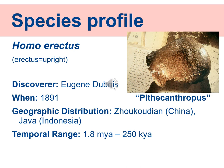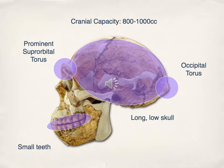Homo erectus can be found at Zhoukoudian in China and in other parts of Southeast Asia. They date to about 1.8 million years at their oldest and around 250,000 years at their youngest. In the Asian material attributed to Homo erectus, they have a cranial capacity of 800 to 1,000 cc. Remember, anatomically modern humans have a 1,350 cc brain — but Homo erectus at 800 to 1,000 is already more than Rudolfensis.